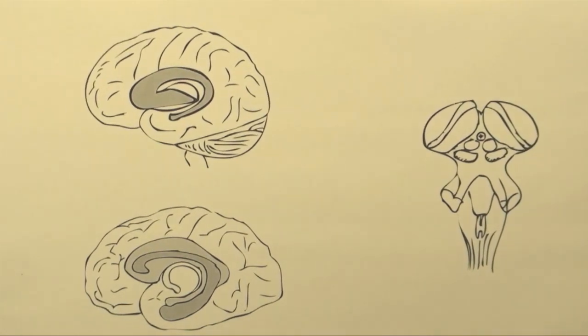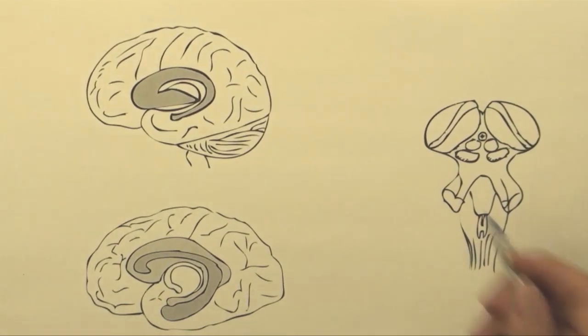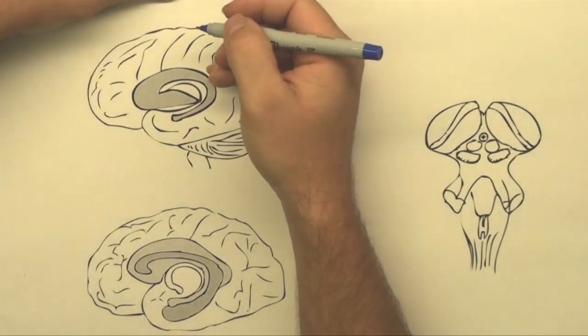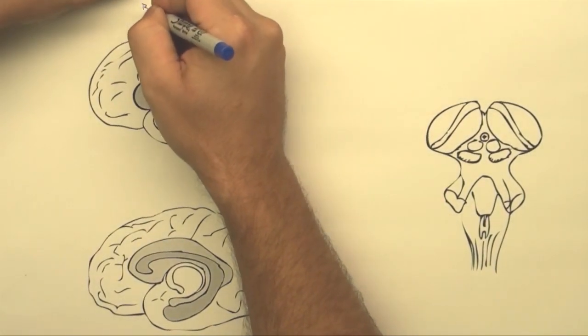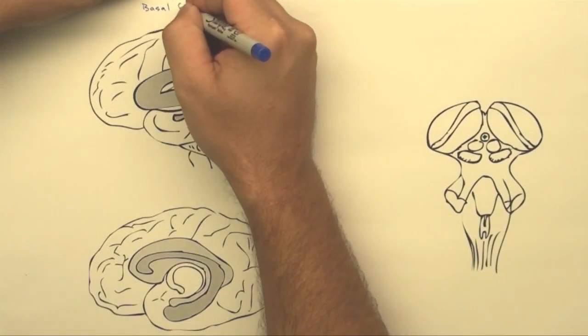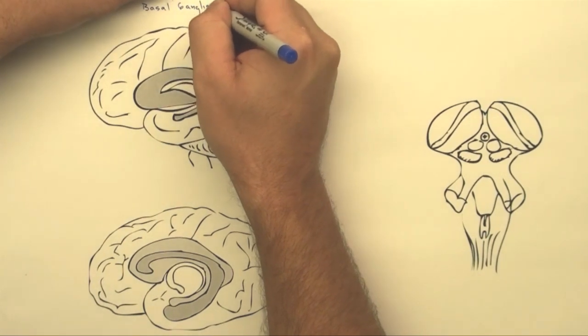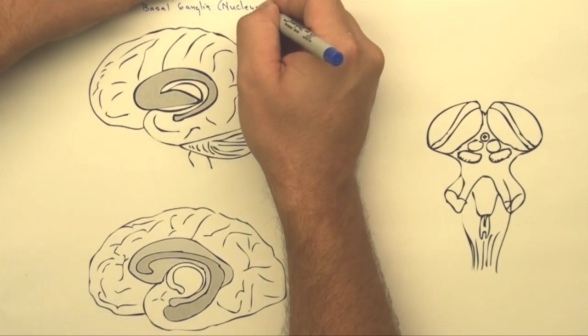Okay, I'm going to run you through the posterior view of our diagram. Basically, what this brain is for here is so that I have one brain where I can outline something called the basal ganglia. This is also called the basal nucleus. Might as well get this out of the way right away.